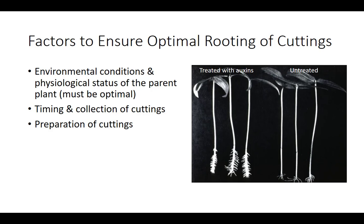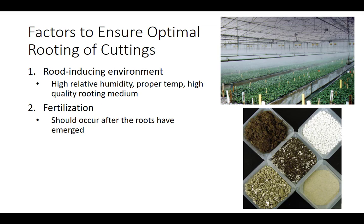Herbaceous plants are generally easy to root. Difficult-to-root plants, which are typically woody, require that the bark be scraped off at the base of the cutting. Both easy-to-root and difficult-to-root cuttings are typically treated with auxins to stimulate rooting. After the cutting is taken from the parent plant and properly prepared, the root-inducing environment must be optimized to maximize rooting.